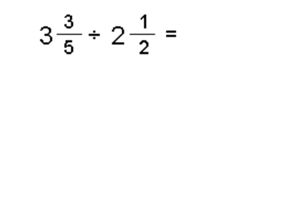If we've got three and three fifths, then we do three times five which gives us 15, and then we add on the three—that's going to give us 18 fifths. So three and three fifths is the same as 18 fifths, and we're still dividing. And we have two and a half, and that's two times two add one—that's going to give us five over two.